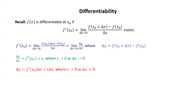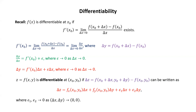This alternative form of the definition of differentiability generalizes nicely to a definition for functions of two variables. We say that z equals f(x, y) is differentiable at (x₀, y₀) if delta z — which is f(x₀ + delta x, y₀ + delta y) minus f(x₀, y₀) — can be written as delta z equals the partial of f with respect to x at (x₀, y₀) times delta x, plus the partial of f with respect to y at (x₀, y₀) times delta y, plus epsilon₁ delta x plus epsilon₂ delta y, where epsilon₁ and epsilon₂ go to 0 as (delta x, delta y) goes to (0, 0).